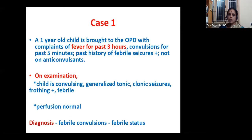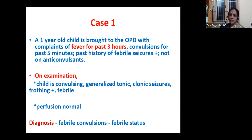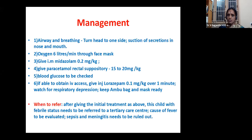Case 1: A one-year-old child is brought to the OPD with fever for three hours and convulsions for the past five minutes. There is a past history of febrile seizures and the child is not on anticonvulsants. The doctor observes the child is having active generalized tonic-clonic convulsions with frothing; the child is febrile; perfusion is normal. The diagnosis is febrile status epilepticus — any convulsion lasting more than five minutes is called status epilepticus.